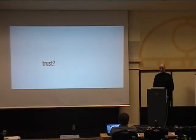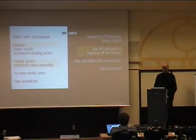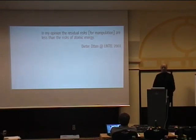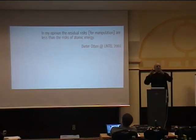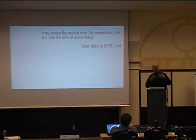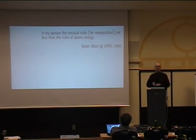The fourth point: loss of transparency and exposure of secrecy. Some people trust voting machines. An internet voting expert from Osnabrück says, 'In my opinion, the residual risk for manipulation is less than the risks of atomic energy.' He's talking about the crypto system in use. We can build pretty good crypto systems, use standard cryptography, and we know how to use cryptography in voting systems so it's tempo-safe — as long as it's a closed system. But unfortunately, it's not.